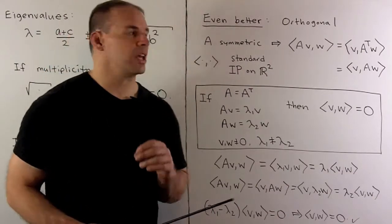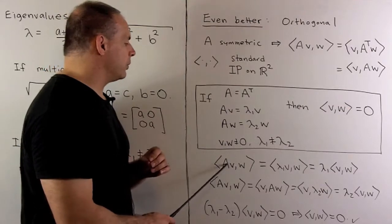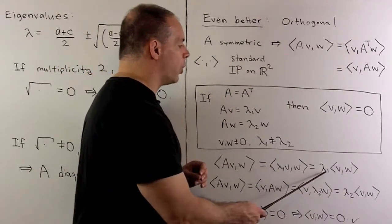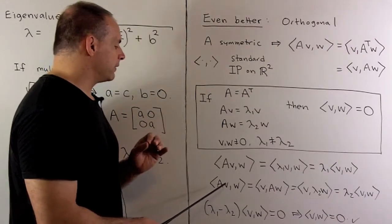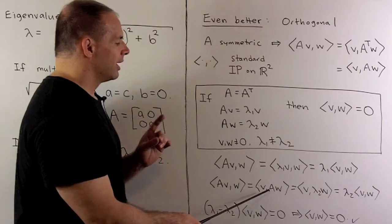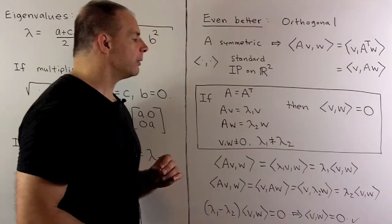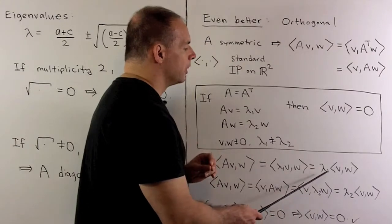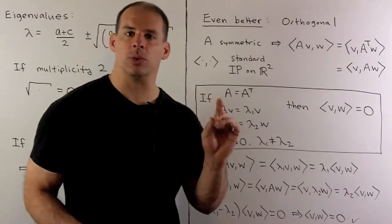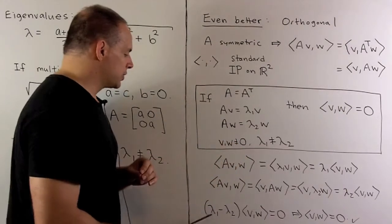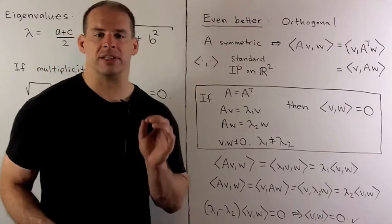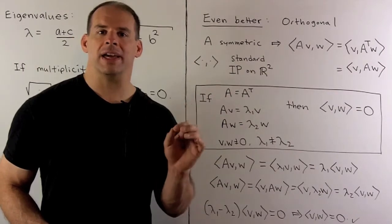That follows by using this result. Taking the inner product of A times V with W: A times V is lambda one times V, so we can pull lambda one out front. Taking the inner product of A times V with W again but pushing A to the other side — since it's symmetric — gives lambda two W, since W is an eigenvector, and we pull lambda two out front. Setting these equal and moving everything to one side: lambda one minus lambda two times the inner product of V and W equals zero. Since lambda one is not equal to lambda two, we cancel that factor and conclude the inner product of V and W is zero, so V and W are orthogonal. In this case we'll have an orthogonal basis of eigenvectors.